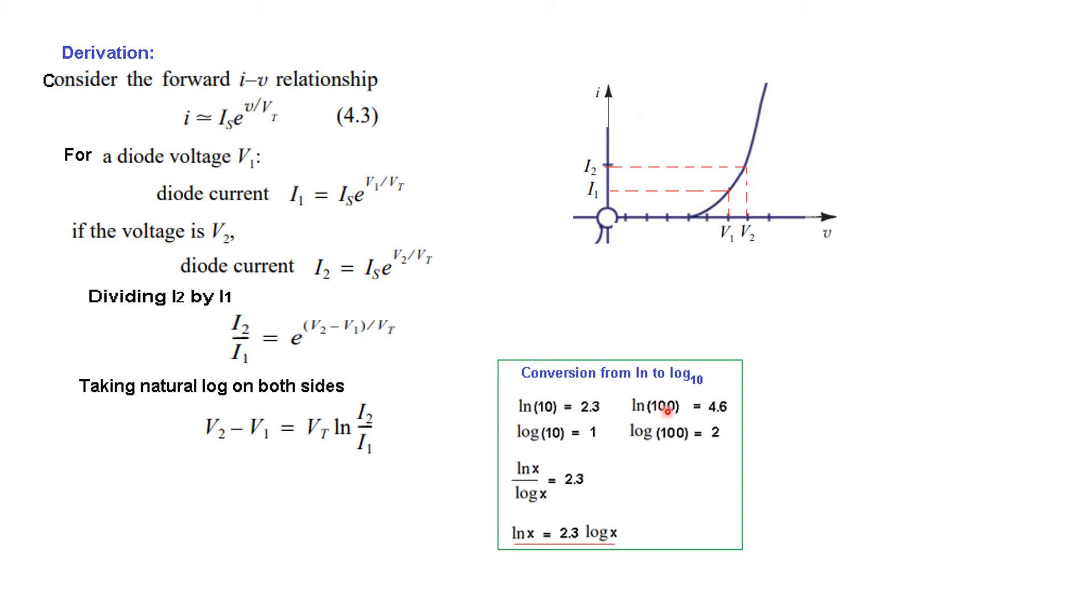So in general, we can write ln(x) divided by log(x) equals 2.3, and therefore ln(x) equals 2.3 log(x). We will use this formula to convert to log base 10.